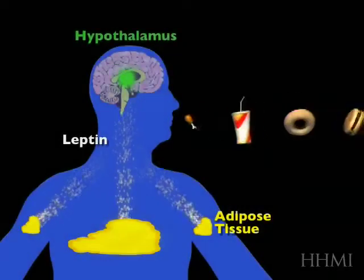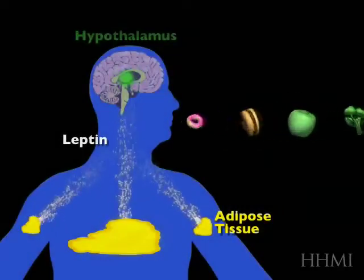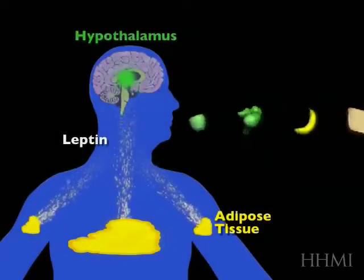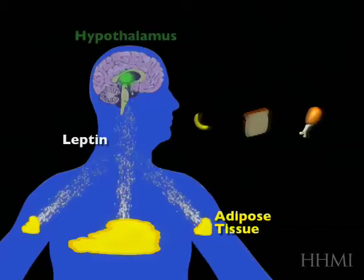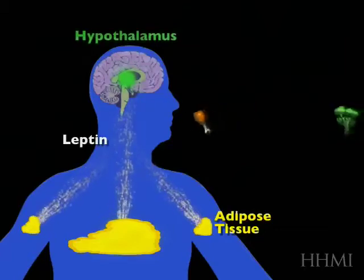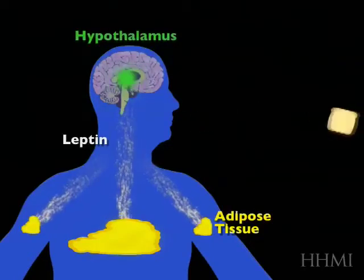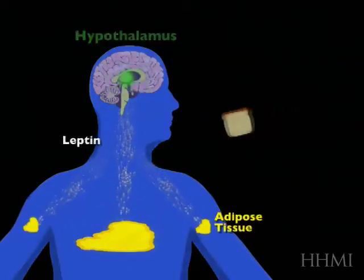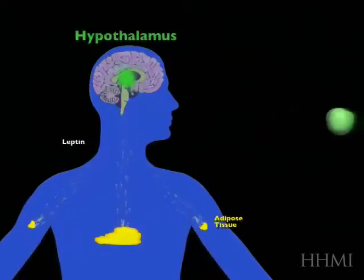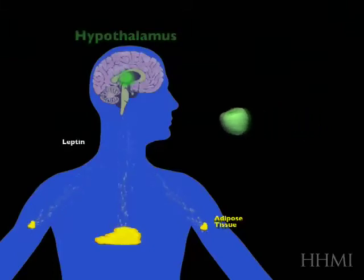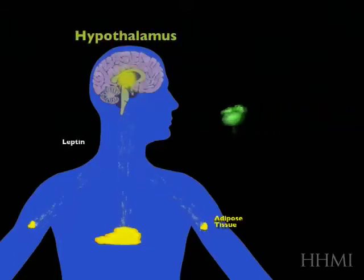At equilibrium, at your normal weight, leptin is made and you're eating different types of food. Now let's imagine you were starving or you went on a diet. Your fat mass would contract and you would make less leptin.